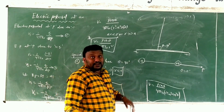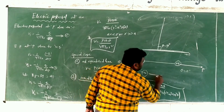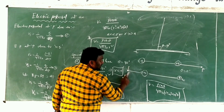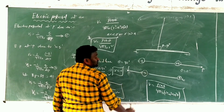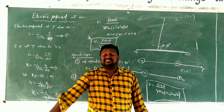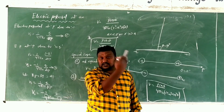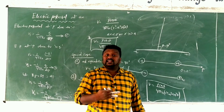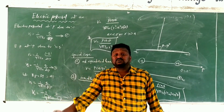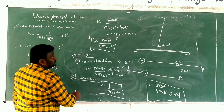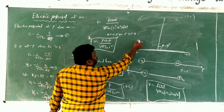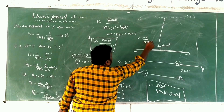If the same point is towards or nearer to the negative charge on the axial line, the angle is taken as 180 degrees. Since cos 180 equals minus 1, we get V equals minus P by 4 pi epsilon naught R squared.